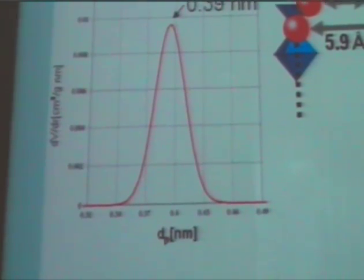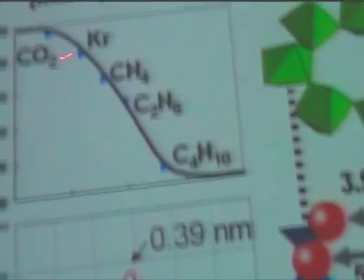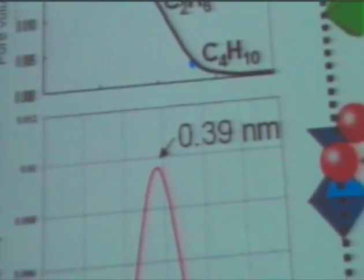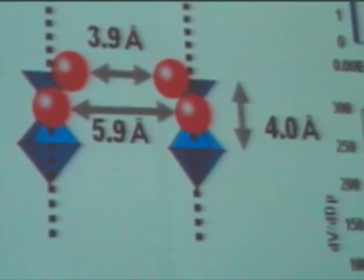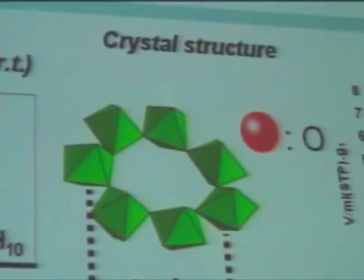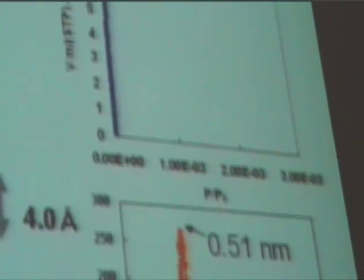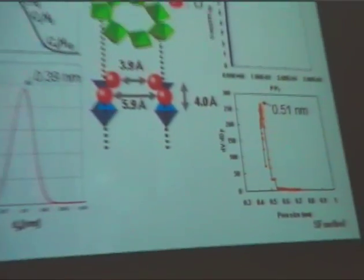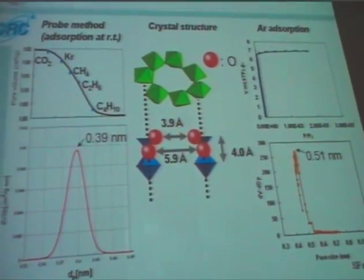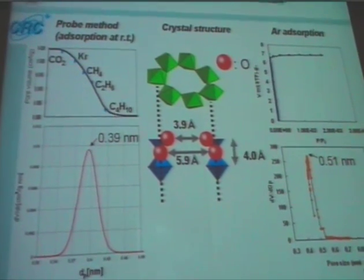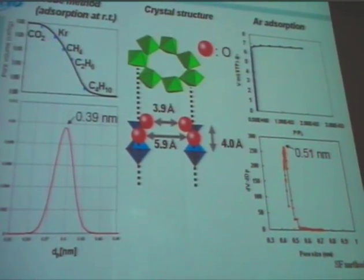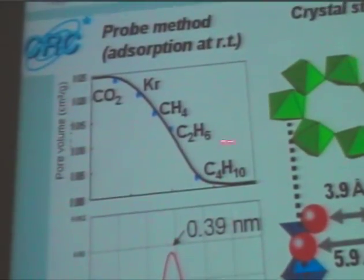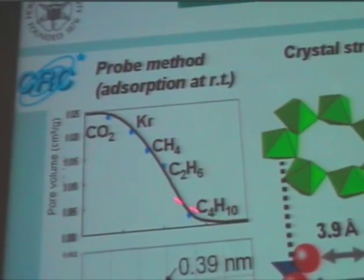We also conducted the gas adsorption method — adsorption of small gas molecules at room temperature. In the case of CO2 adsorption, we observe that the amount is very small — about 0.025 cm³ per gram. It corresponds to the full occupation of the channel volume. The CO2 can go in, methane can go in as well, and butane can go in.